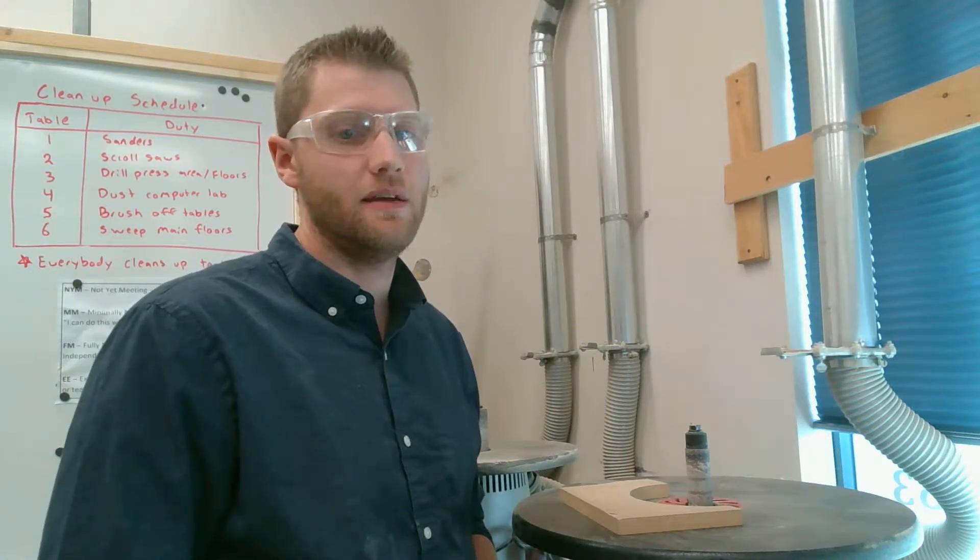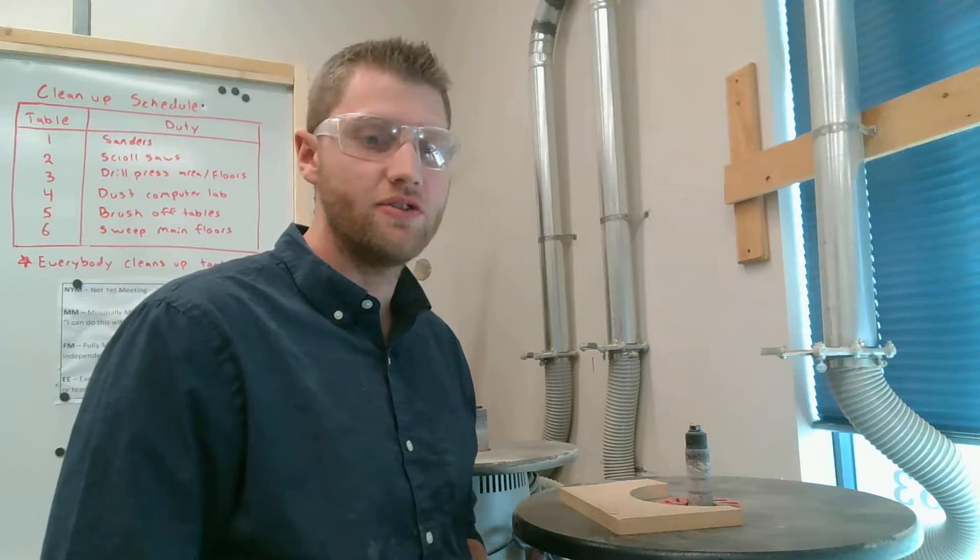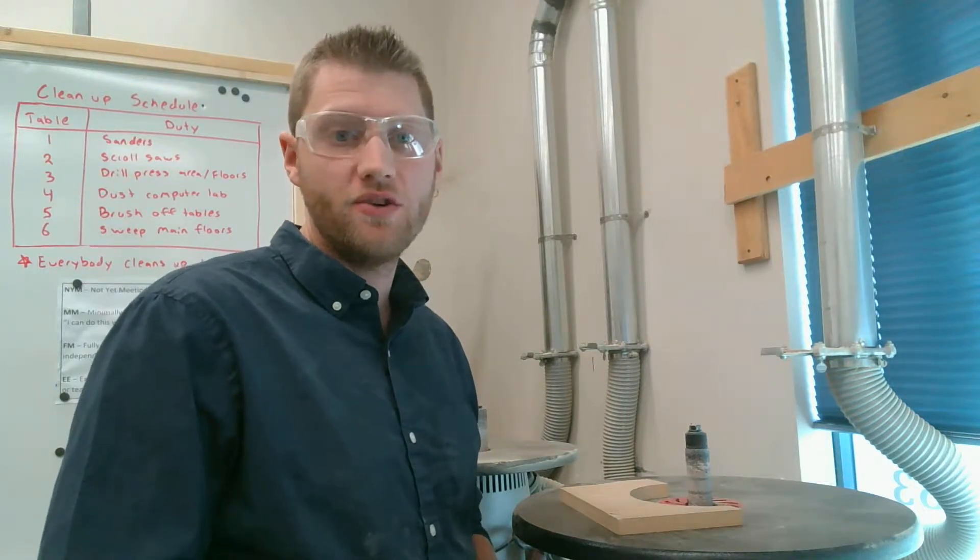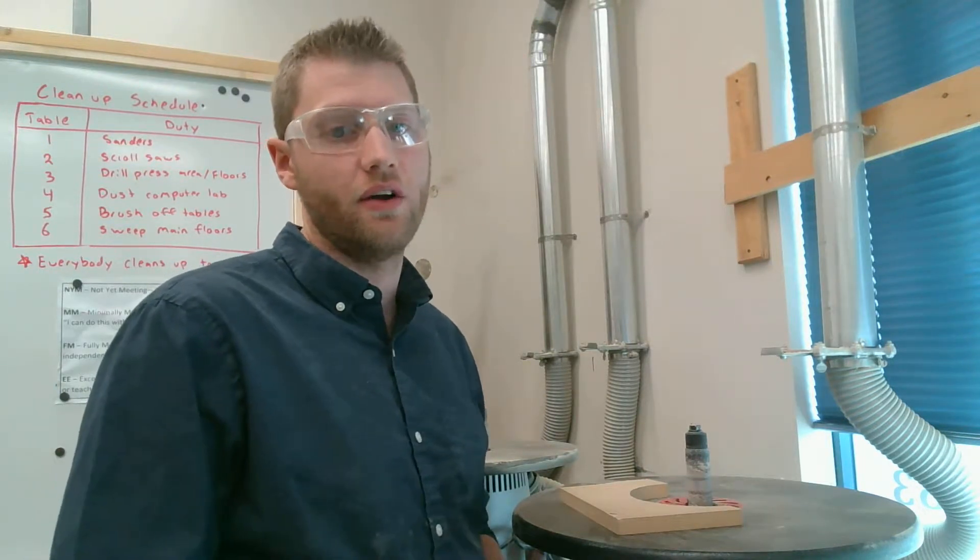Our spindle sander is exactly the same. Again we want to make sure our fingers are at least one inch from that sanding area. Again, an inch about that big. We can measure it if you want and there's also markings on our sanders.